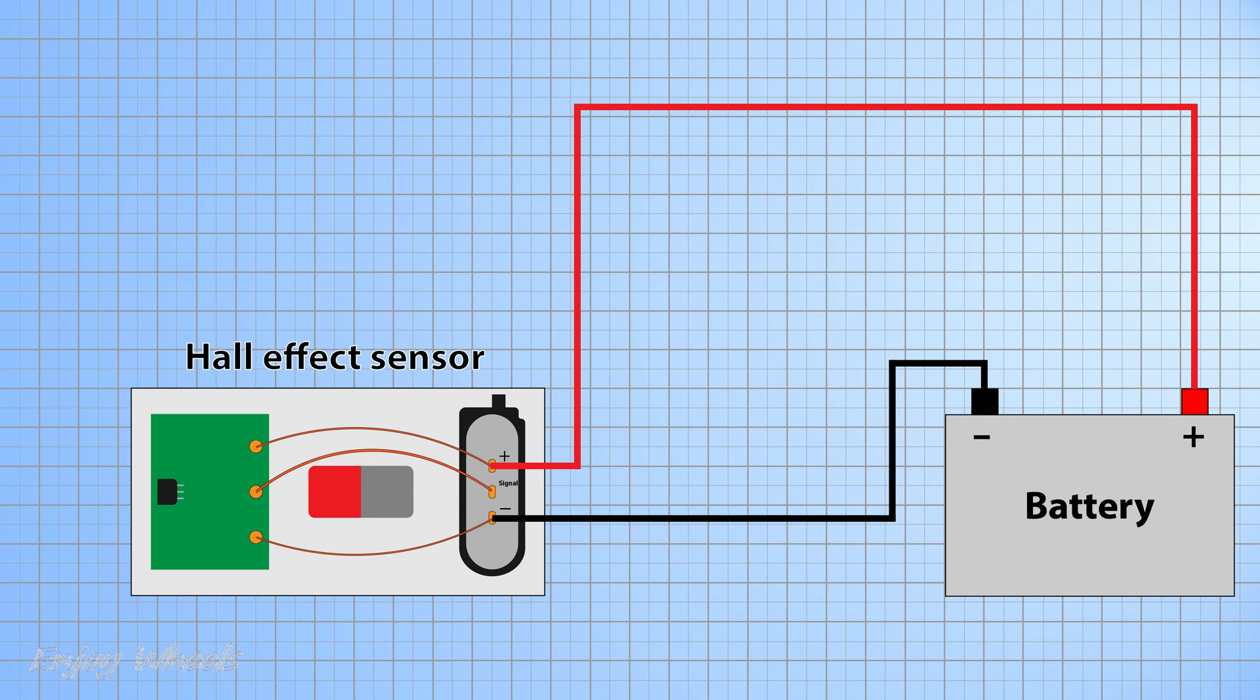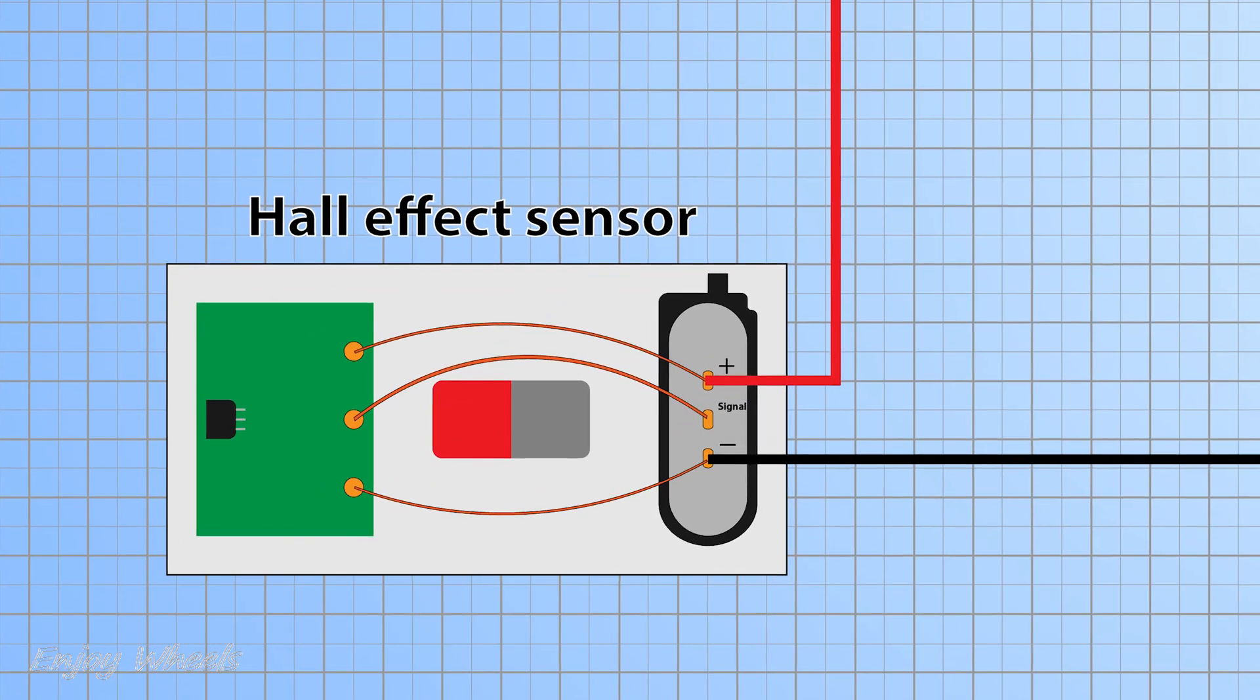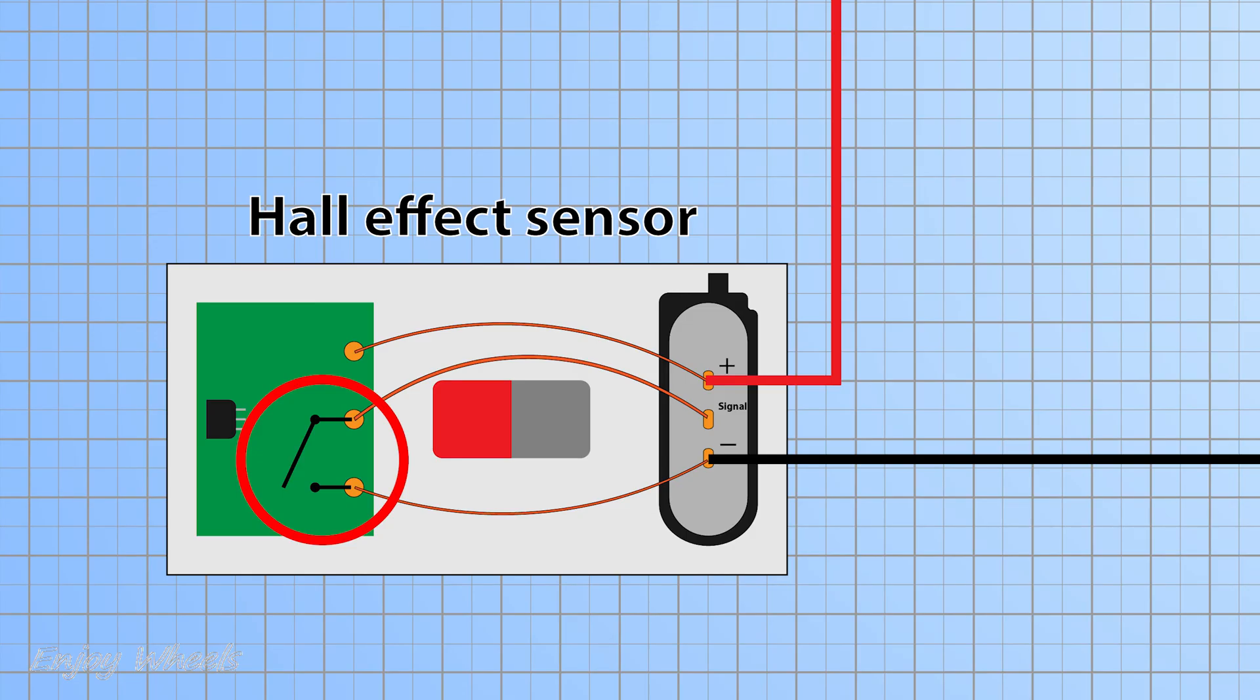Then the signal output works like this. In the absence of a metallic object, it is as if the pin was not connected. I symbolize it here by an open switch. And if we approach a metal object, it is as if the pin were connected at the negative pin. I symbolize that from a closed switch at the negative pin.